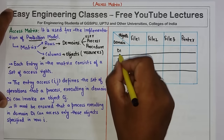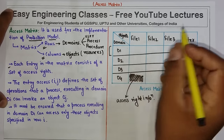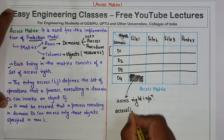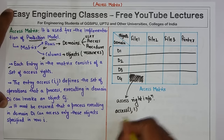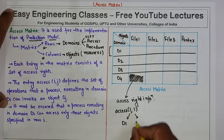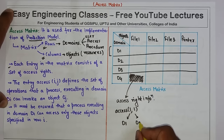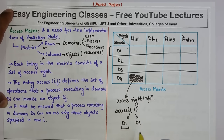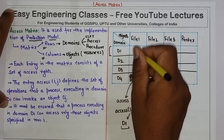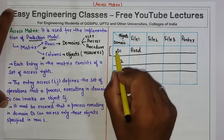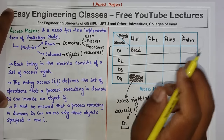For example, a process is executing in domain d1, so i is 1. If I write access[1][1], I am representing domain 1 and object 1 because j is 1. It means that the process executing in domain 1 can access the resources in object 1. So for example if I have an entry like 'read', it means that the process executing in domain 1 can read file 1.